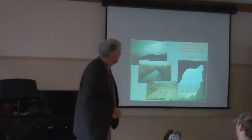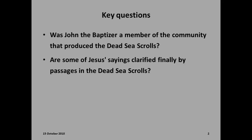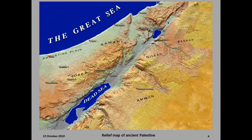Today we're looking at John the Baptizer, Jesus from Nazareth, and the Dead Sea Scrolls. Here is the Sea of Galilee, the River Jordan flowing from the north under Hermon heading south, the Qumran Caves. Here are our key questions: Was J.B. a member of the community? Are some of Jesus's sayings clarified? The Jordan defines the region from Hermon to the Dead Sea. Here is the Sea of Galilee, the Jordan Rift Valley — which was full of water in 60,000 BC — Samaria, the Philistine Plain, Judea, Jerusalem, Jericho, and Qumran is right here.